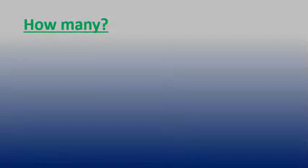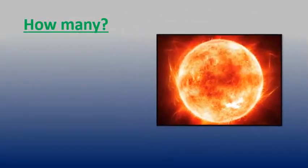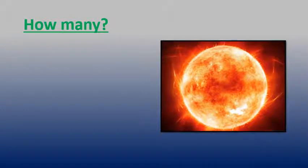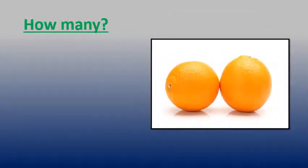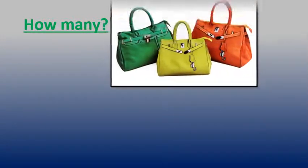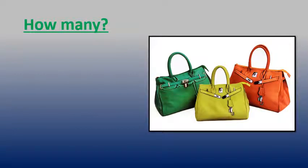Okay, now let's move to our next step. It is very easy — a couple of questions about what do you see and how many. How many suns do you see? Three — excellent! Okay, how many oranges do you see? Two — very good! And here, how many bags do you see? Wonderful — three bags: one, two, three.